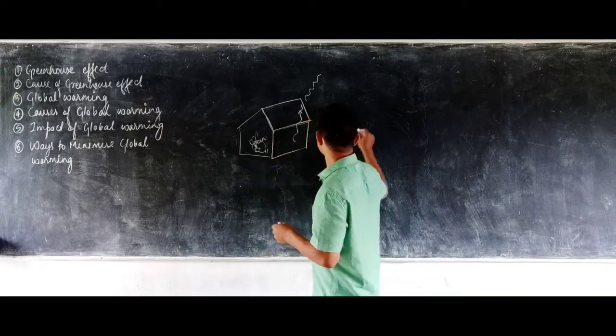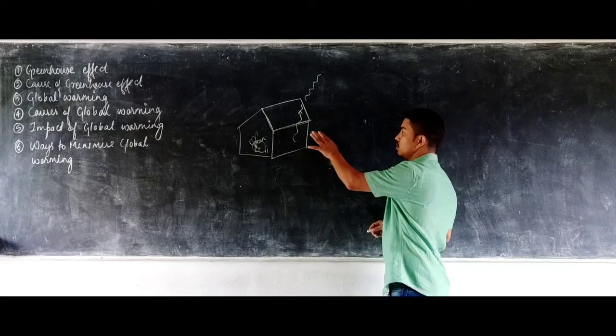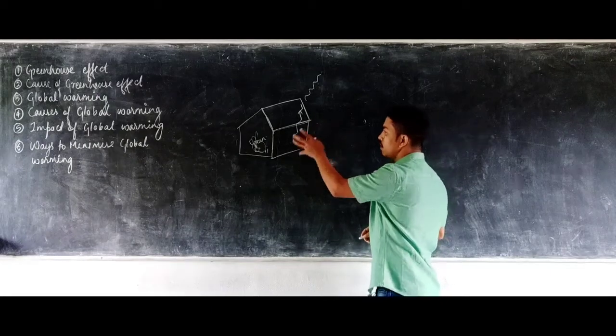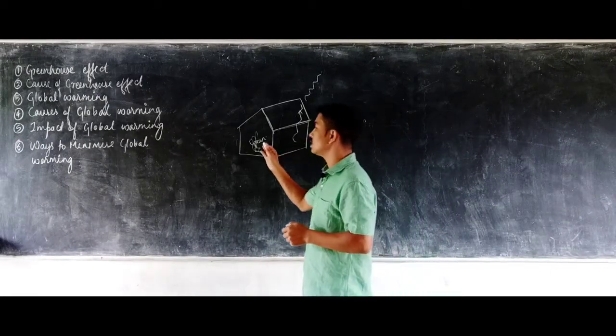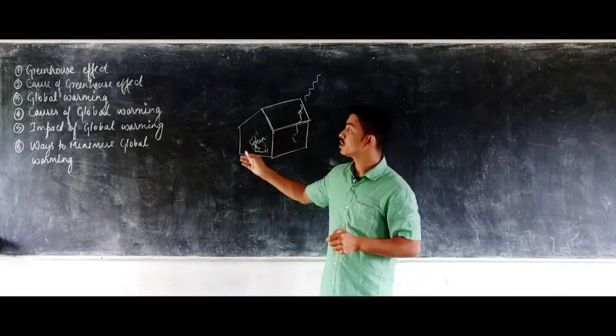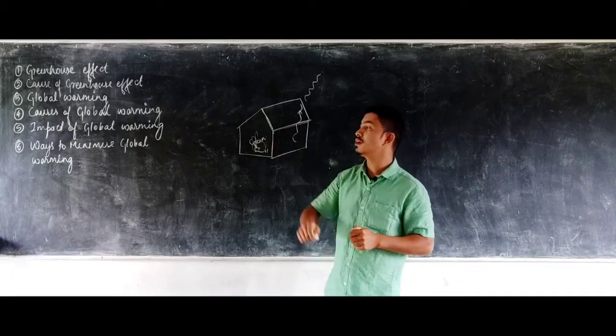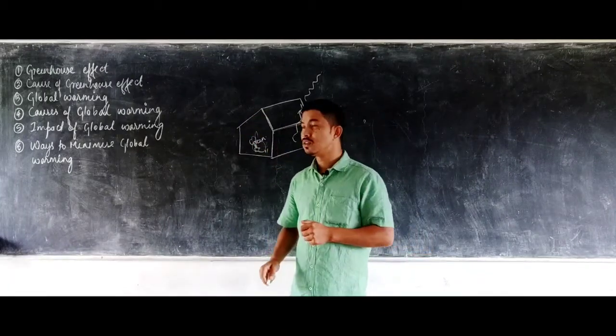As a result, heat could enter the house but could not escape outside, so the temperature inside the house remained warm. When viewed from a distance, the house appeared green because inside there were green plants — that is why the name 'greenhouse effect' comes from.